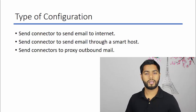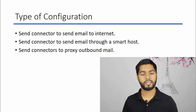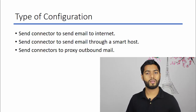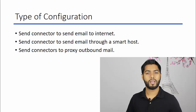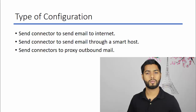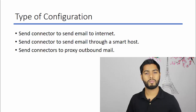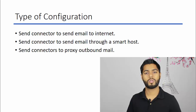Let us see what are the possible configurations in an Exchange Server. You can configure your mailbox server to send email directly from your mailbox server to an external recipient SMTP server, or you can configure your Exchange Server to forward the emails to a third-party device like Cisco IronPort, Mail Marshall, or any other SMTP gateway, which will then send your SMTP messages to the recipient SMTP server.